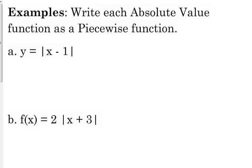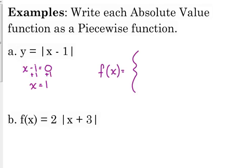We're going to write these as piecewise functions without worrying about graphing them first. Take what's inside the absolute value — x minus 1 — set it equal to zero, and solve for x by adding 1 to both sides. So 1 is the number that follows both inequalities. For the first piece, change all the signs: negative x plus 1, when x is less than 1. For the second piece, just drop the absolute value bars — x minus 1 — when x is greater than or equal to 1. It really is that simple.